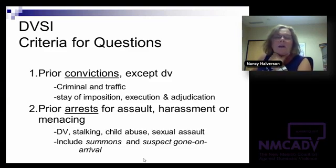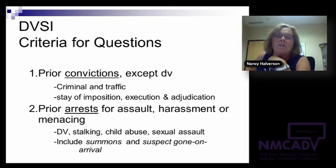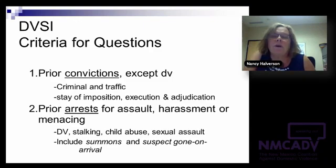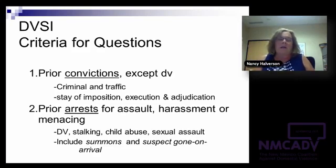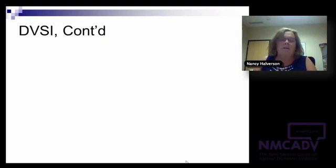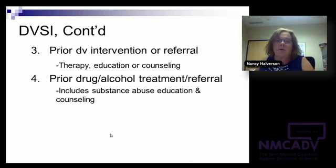Item three is whether there's been a prior domestic violence intervention or referral — this could be therapy, education, or counseling. Probation officers would look through probation history to determine it. Maybe a victim says he went to counseling, or they tried marriage counseling. If there's been any prior referral for intervention based on violent behavior, some points accrue here.